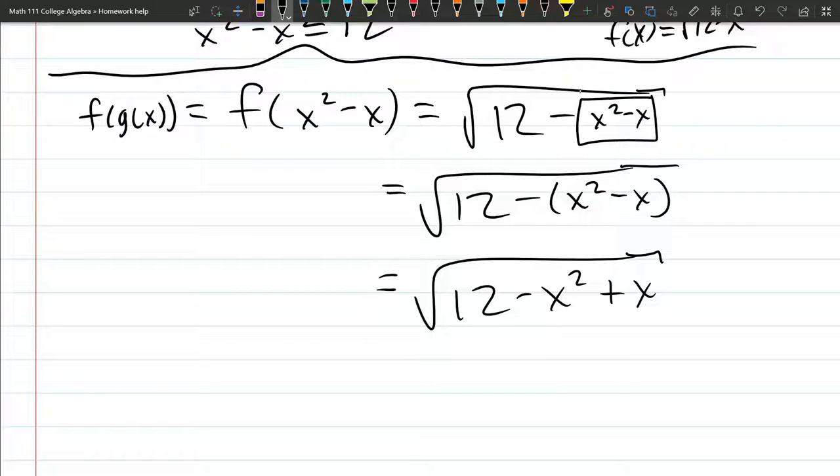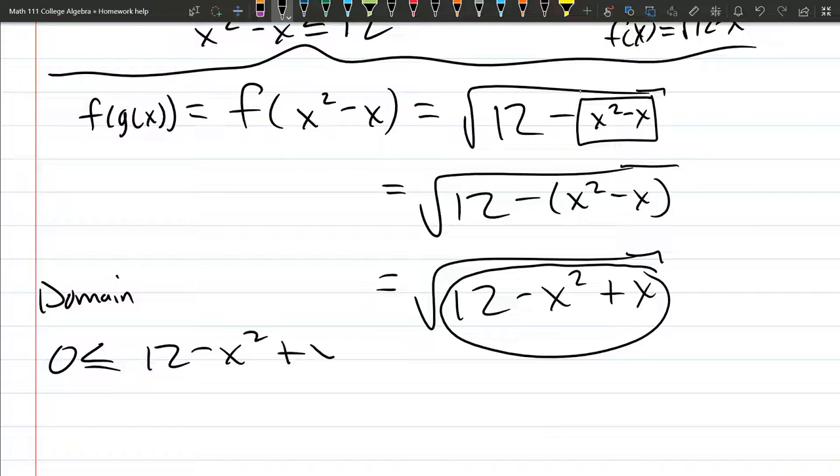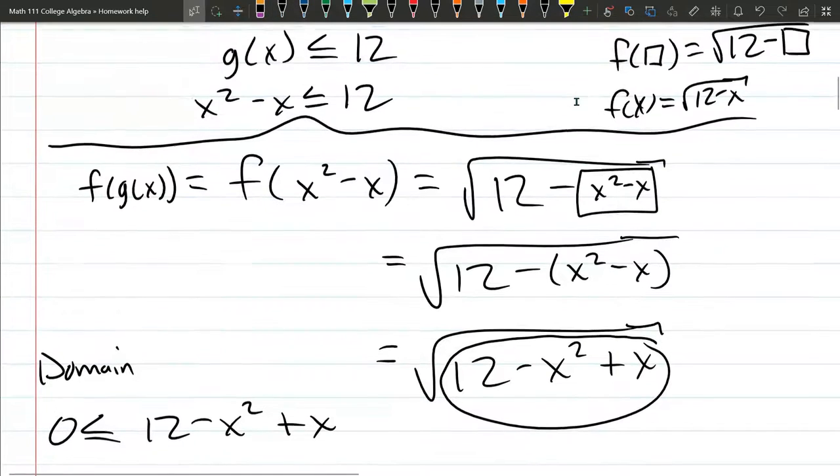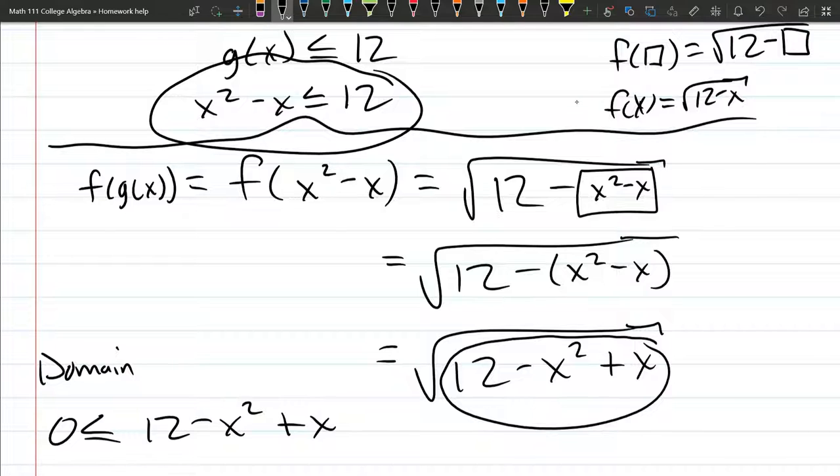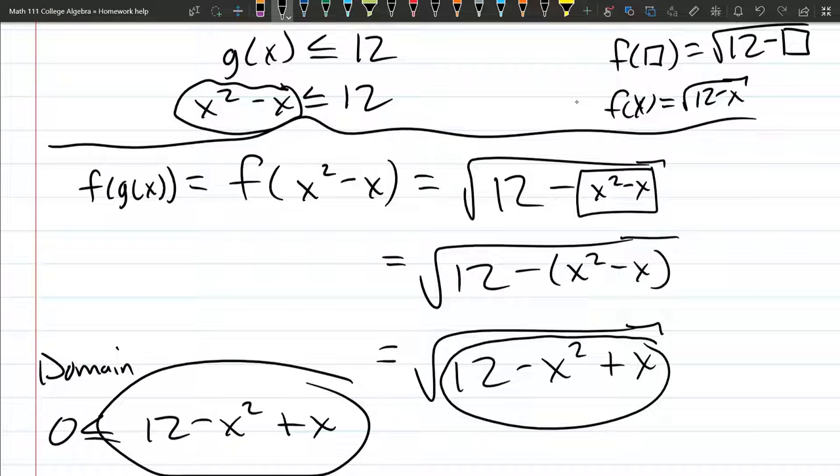And if you just got this function, and you were asked for the domain now, you would make sure that the input for the square root is greater than or equal to zero. And that's what you would have. This is going to be the domain. We still have to solve this. But I just want to show you that what I just wrote down is the exact same as this. If you just subtract x squared, if you subtract x squared and add x, you're going to be looking at this right here.